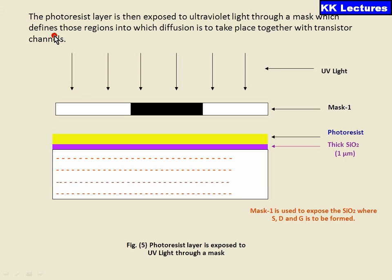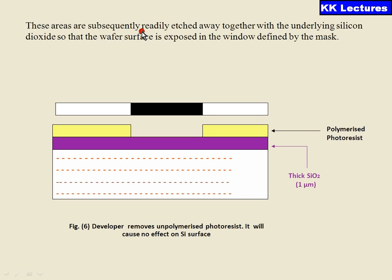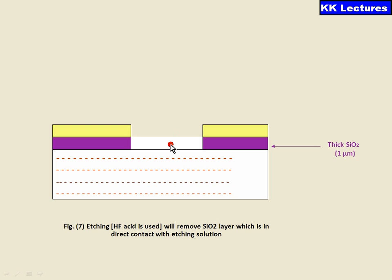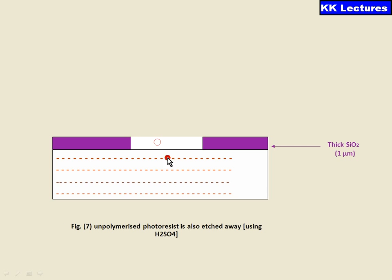Since we require only a particular area, we cover the substrate with a suitable mask and pass UV rays. Where UV rays directly hit the surface, that area becomes hard; where it is covered with the mask, the surface remains soft. Those soft areas are subsequently etched away along with the underlying silicon dioxide, exposing the wafer surface through the window defined by the mask. Using the mask, we remove the photoresist as well as the SiO2 layer in the window section, and remove the remaining unwanted photoresist material.